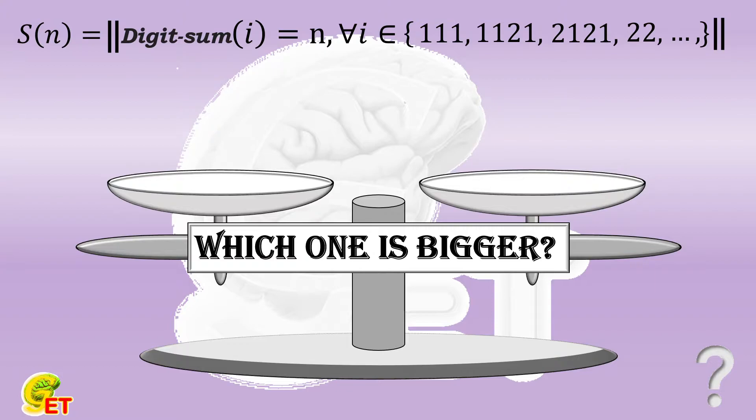For example, S of 3 is equal to 3, because there are 3 numbers whose digit sum is 3 in this set: namely 111, 12, and 21.